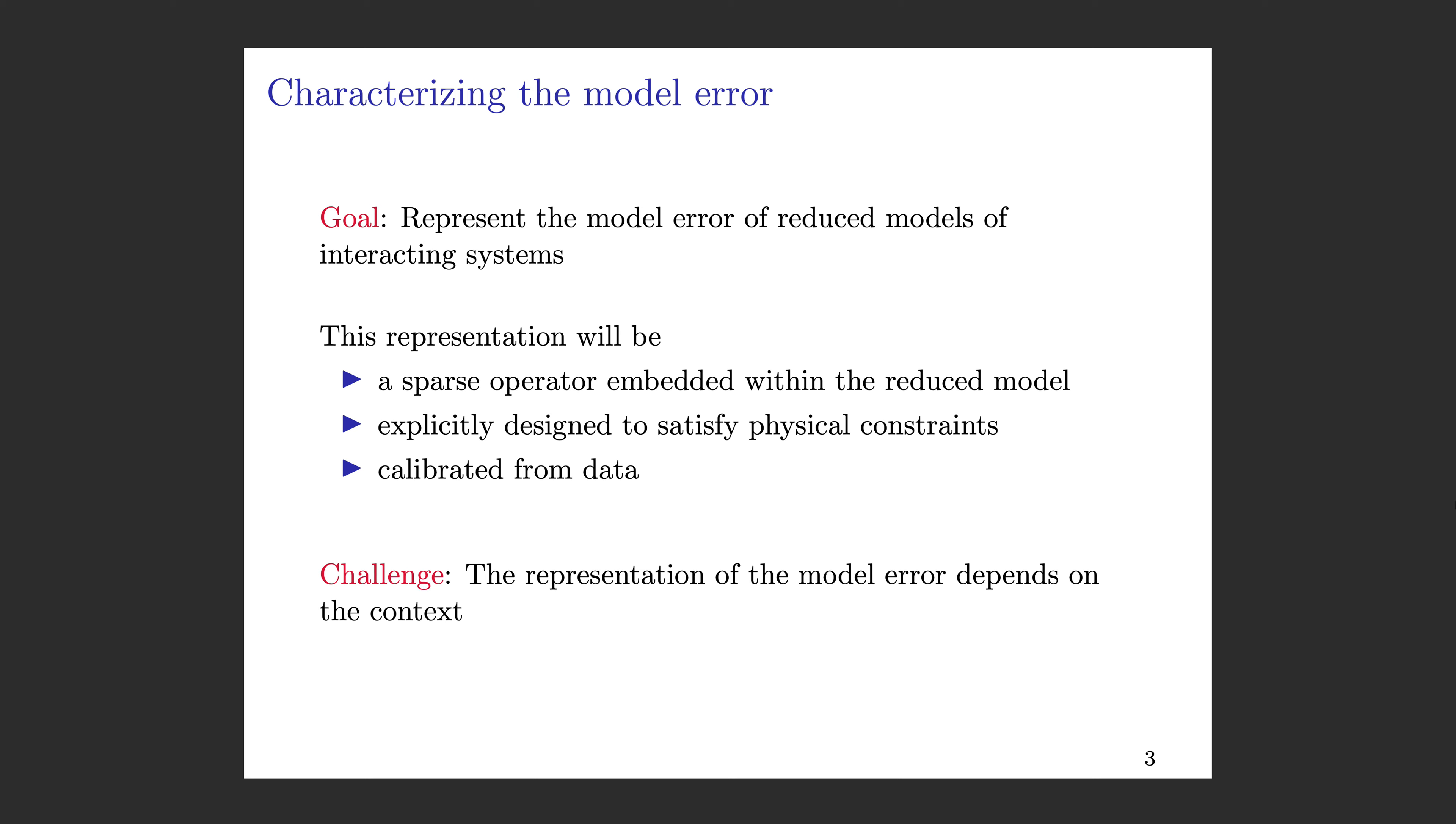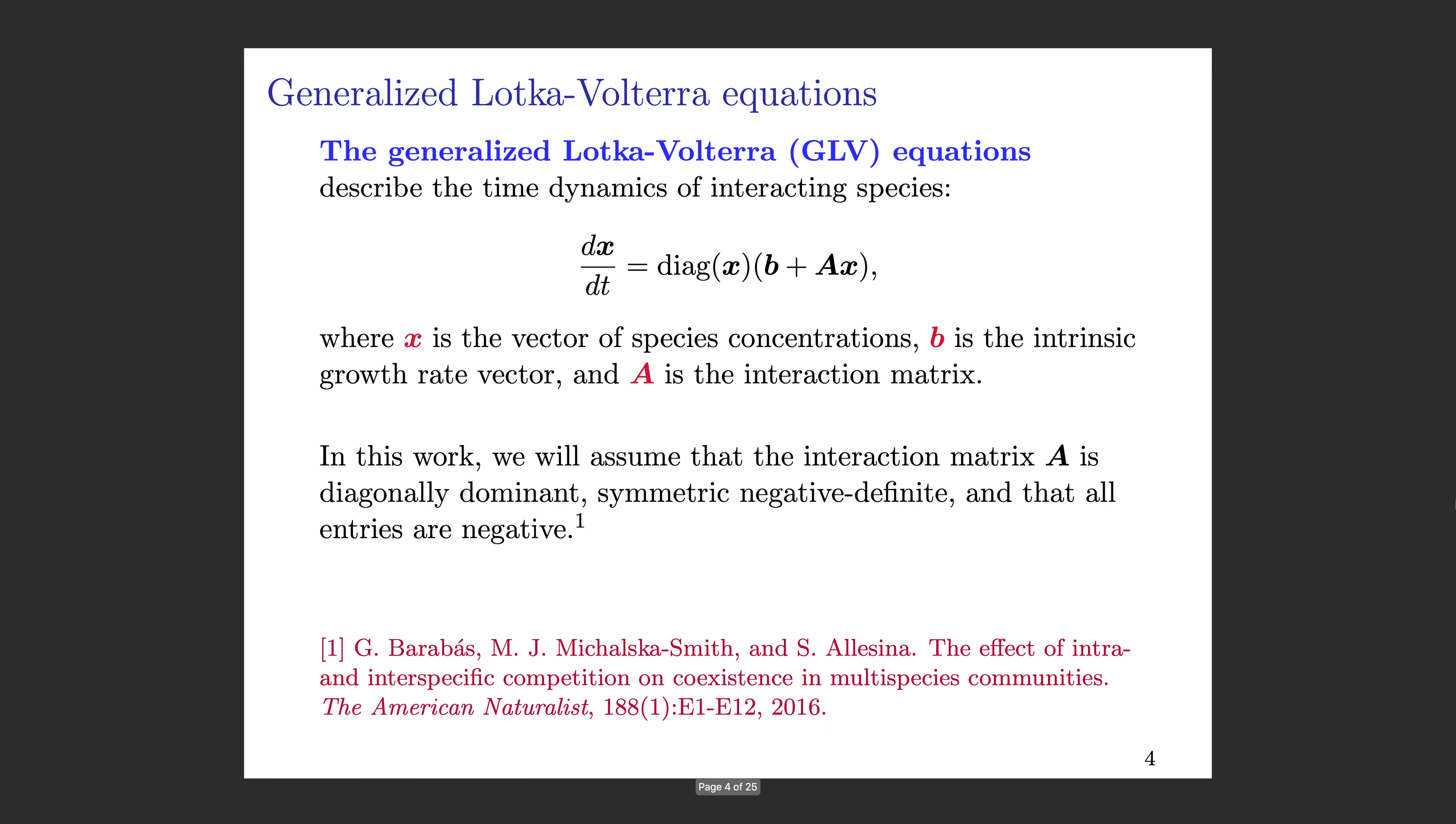How do we characterize the model error? The goal for this work is to represent the model error of reduced models of interacting systems. This representation will be a sparse operator embedded within the reduced model, explicitly designed to satisfy physical constraints and calibrated from data. The challenge is that the representation of the model error depends on the context.